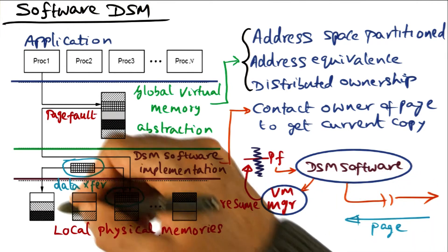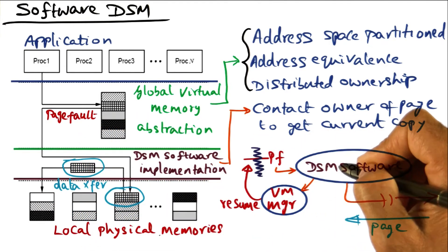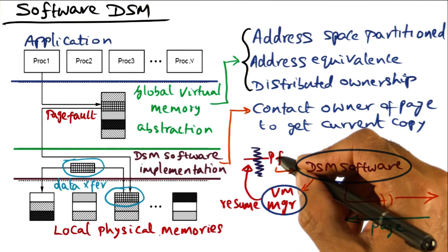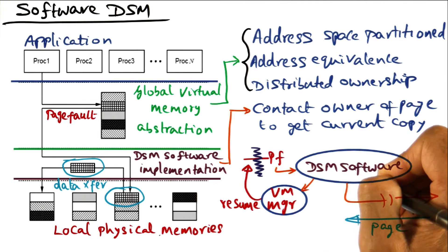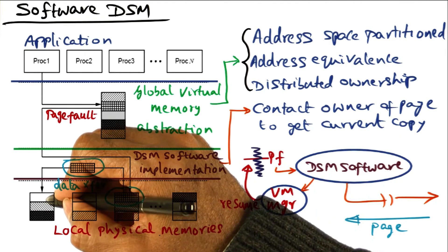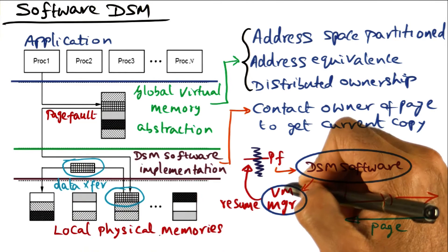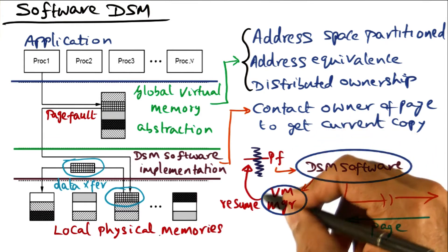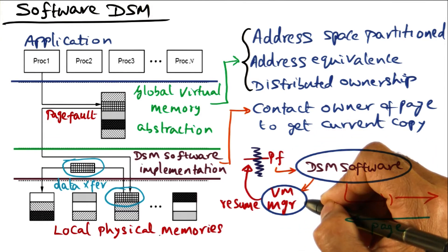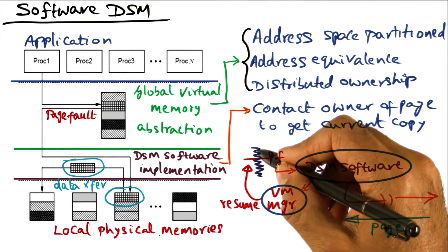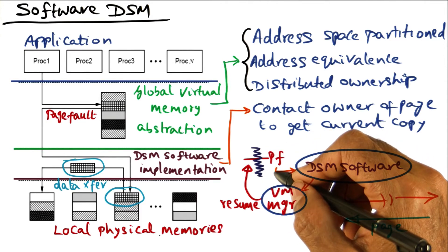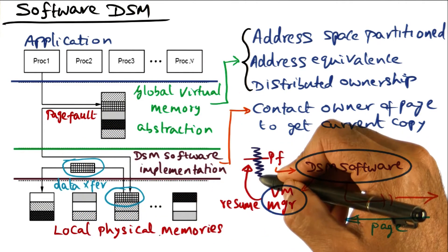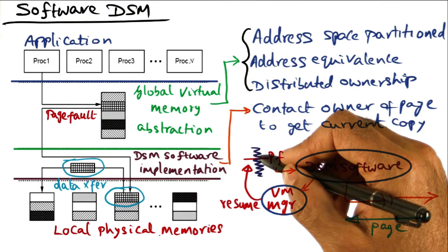Once the page has been brought into the physical memory, the DSM software contacts the virtual memory manager and says: I've completed processing the page fault, brought the missing page, and put it into a particular location in the physical memory. Would you please update the page table for this processor so that it can resume execution? Then the VM manager updates the page table for this thread to indicate that the faulting virtual page is now mapped to a physical page, and the thread can resume its execution.